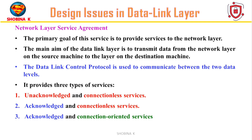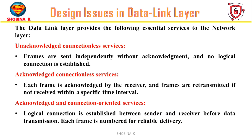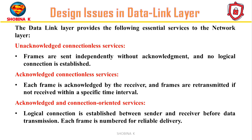First, network layer service agreement — that is, services provided to the network layer. The data link layer acts as a service interface to the network layer, with the primary service being the transfer of data from the network layer on the sending machine to the network layer on the destination machine. It provides three types of services: unacknowledged and connectionless services, where frames are sent independently without acknowledgement and no logical connection is established; acknowledged and connectionless services, where each frame is acknowledged and retransmitted if not received within a specific time interval; and acknowledged and connection-oriented services, where a logical connection is established before transmission and each frame is numbered for reliable delivery.